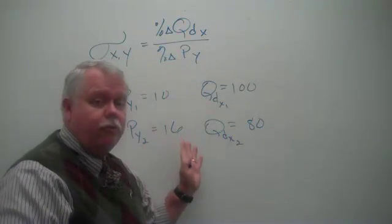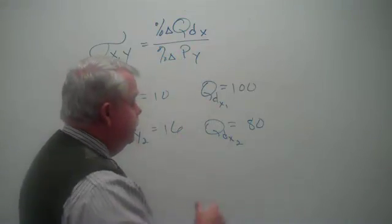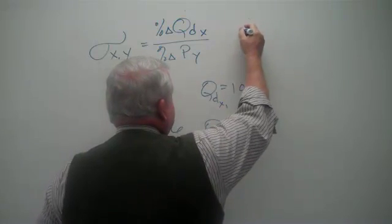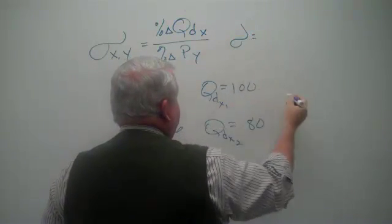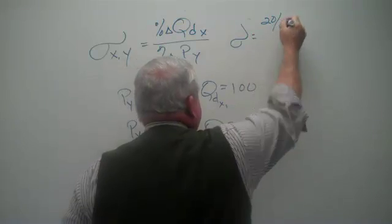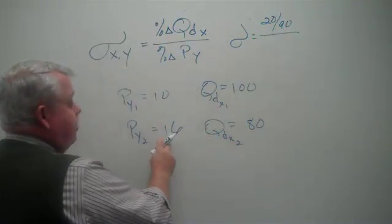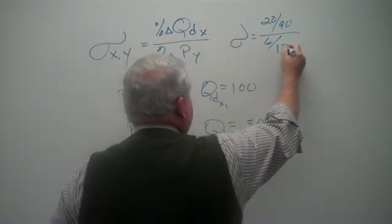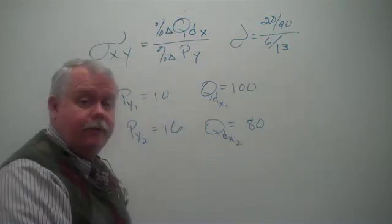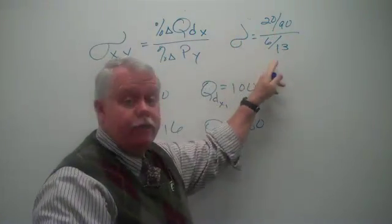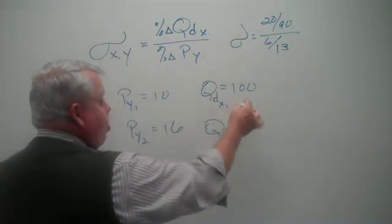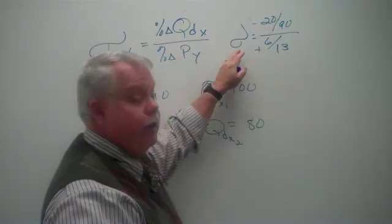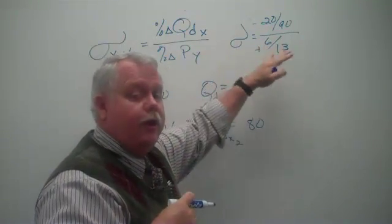Let's calculate the cross price elasticity. Percentage change in quantity is going to be the change in quantity over the average quantity. Percentage change in the price of the other good is going to be 6 divided by 13. Change over the average, change over the average. What do we see? Quantity decreased, so that's a negative change. Price here increased, so that's a positive change. So we're going to be looking at a negative coefficient.